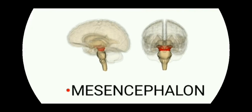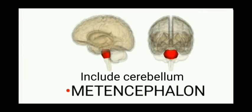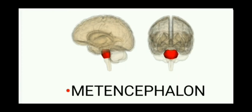Next is the hindbrain. The Metencephalon contains the Cerebellum. The cerebellum is used for motor function. All motor functions are called motor functions. Drinking alcohol affects the motor function of the cerebellum strongly. Pons is also part of this region, and it is called Pons. Sleeping functions are controlled by the Pons.